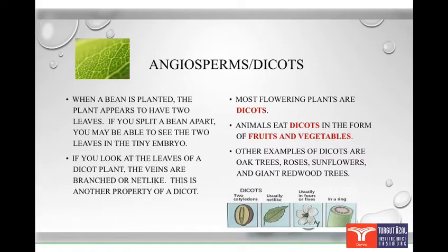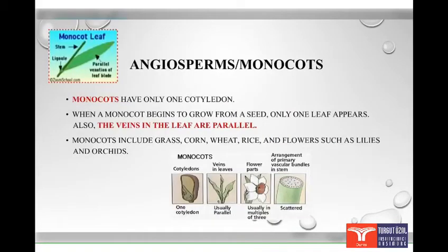Most flowering plants are dicots. Animals eat dicots in the form of fruits and vegetables. Other examples of dicots are oak trees, roses, sunflowers and giant redwood trees. Monocots have only one cotyledon. When a monocot begins to grow from a seed, only one leaf appears. Also, the veins in the leaf are parallel. Monocots include grass, corn, wheat, rice and flowers such as lilies and orchids.